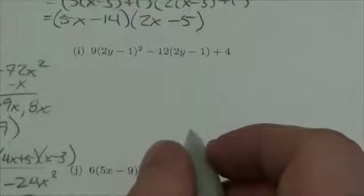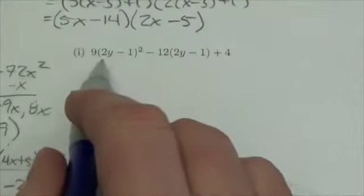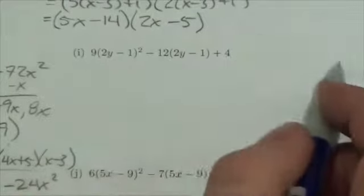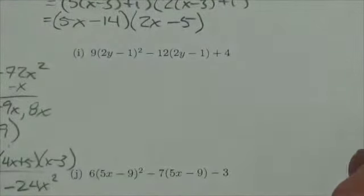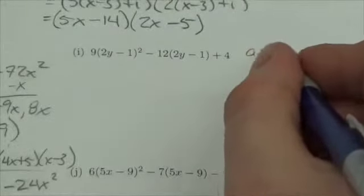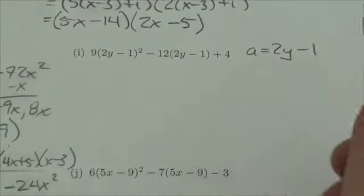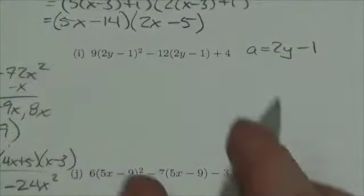Alright, let's take a quick look at 3i, the factoring review. I notice in here that I've got this binomial, this 2y minus 1, that seems to be common here. I don't know what y is, so I don't know what 2y minus 1 is. I'm just going to make it a, just so I can simplify this expression.